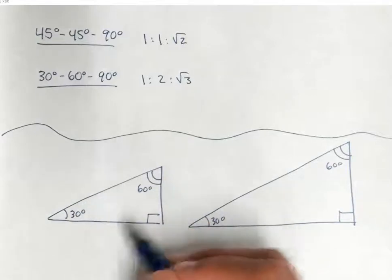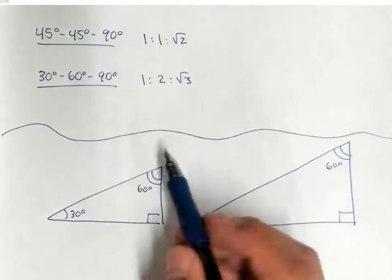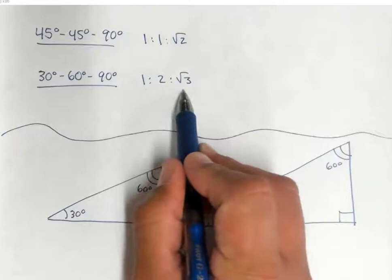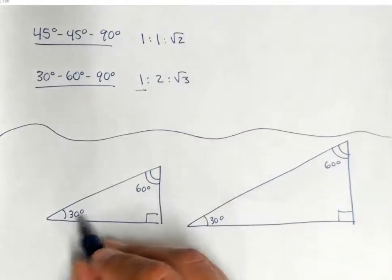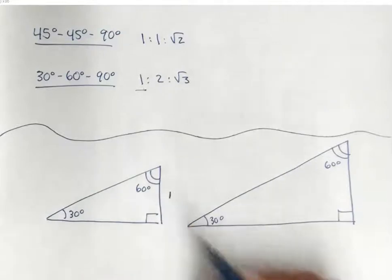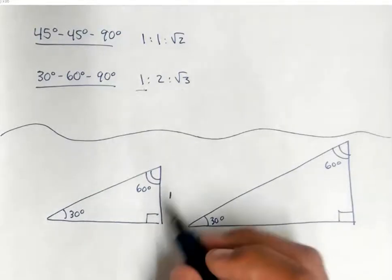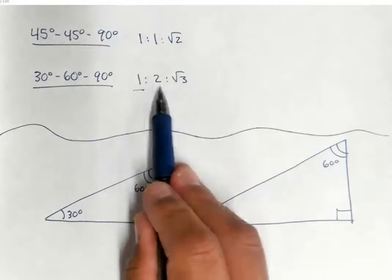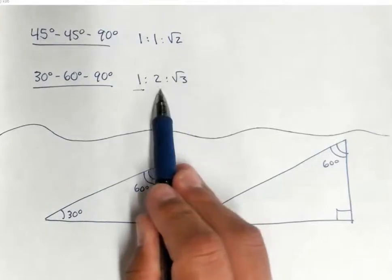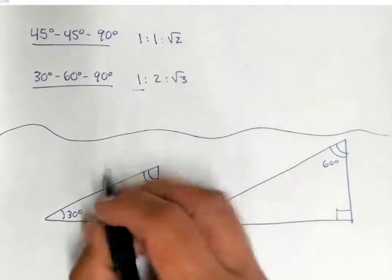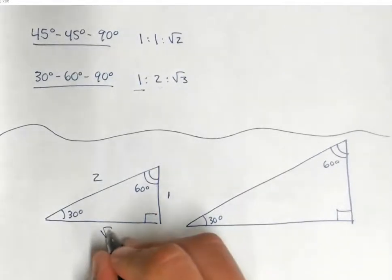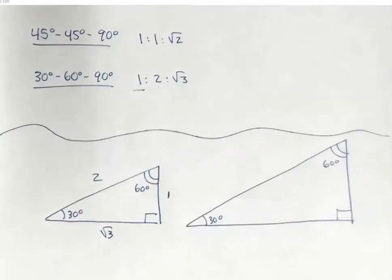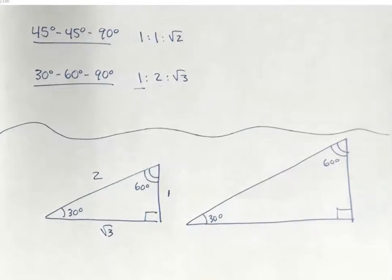Looking at this 30-60-90 triangle: the smallest side is the one across from the 30-degree angle, which measures 1 unit. Of the three values, the largest is 2, so 2 is the hypotenuse of my triangle, and then √3 goes on the remaining leg. You can check that the Pythagorean theorem holds. I'll refer to this as my base 30-60-90 right triangle.